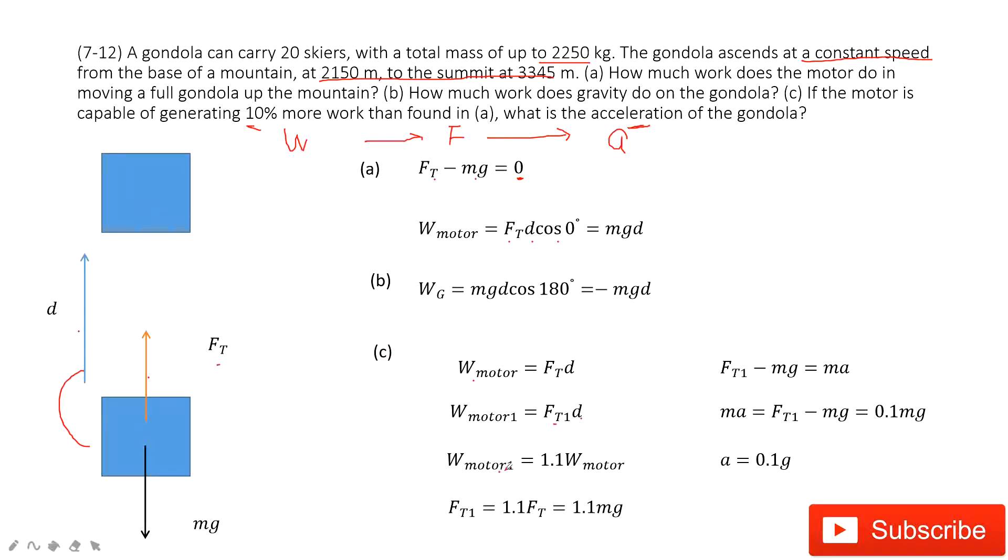And how much we do? 10%. So the new work is 1.1 times the previous work. In this one, we can find the new force. So the new force is just 1.1 mg.